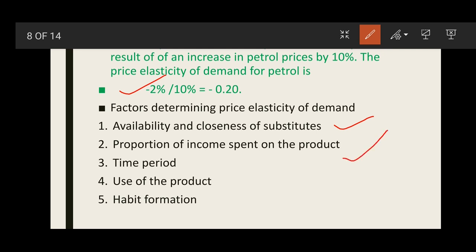But in the case of TVs, if the price of one brand increases, we can shift to another brand because many substitutes are available in the market, so price elasticity is higher. The second determinant is proportion of income spent on the product. Price elasticity will be inelastic if we spend a very small amount of our income on a product or service. For example, sugar and salt — we spend very little income on these, so even if their price changes, demand does not change much.